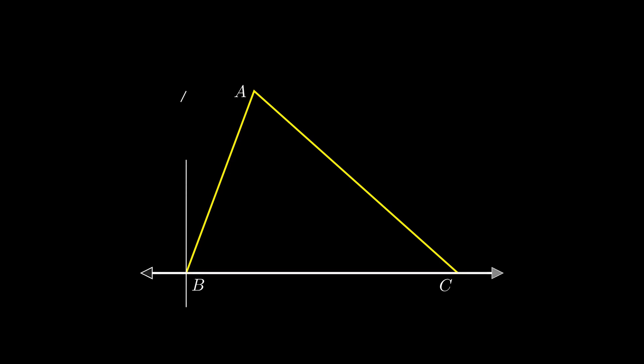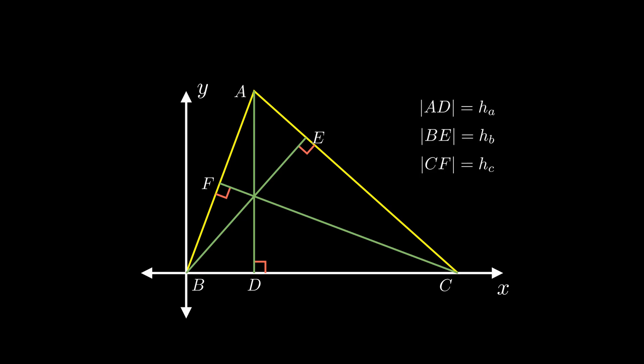Back to our problem, we can fix the triangle in a coordinate system with vertex B at the origin and the side BC along the x axis. Let D, E and F be the foot of the altitudes from A, B, C respectively and let hₐ, h_b, h_c be their corresponding lengths.